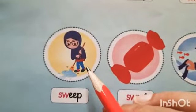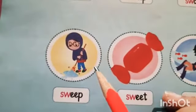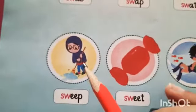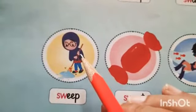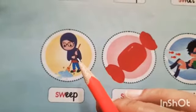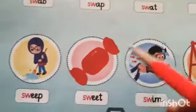Sweepers aate hai na. Hamaari ghar safai karne hai. Bahar jhadu dite hai. Humara kachra le jate hai. Garbage le jate hai. Toh — sweep. She is sweeping the floor.